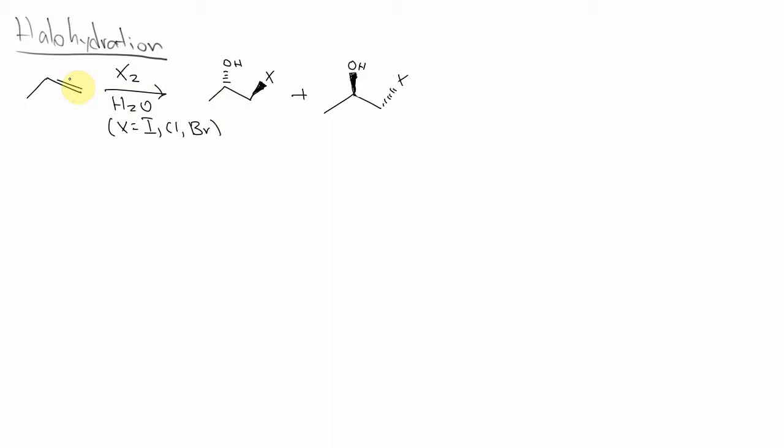And so what's the mechanism? Well, the mechanism is how you would start if you're just doing halogenation. So you basically have a source of electrons, and your X2 can act as an electrophile, and just like in halogenation, we form a bridge.